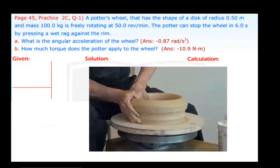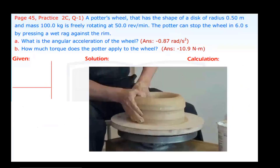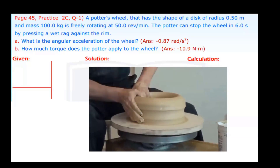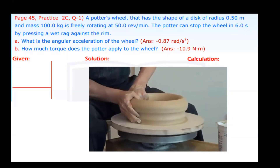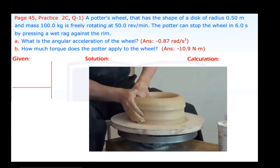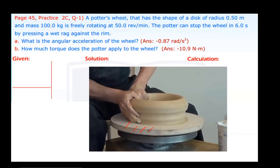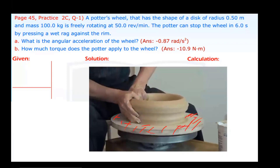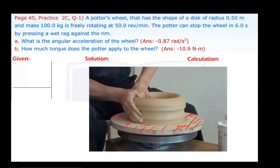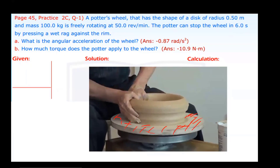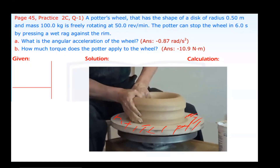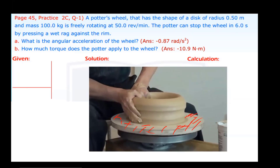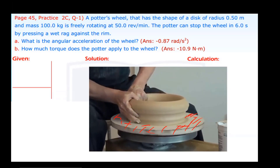It's a potter's wheel. This man is making a pot. You see that? This disc is called a potter's wheel. This potter's wheel is spinning and this man is giving shape to the pot as it is spinning. A potter's wheel has the shape of a disc.